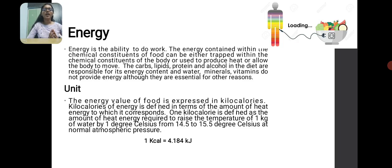First one is energy. Energy is the ability to do work. It is trapped in the chemical constituents of food and produces heat, allowing the body to move or do work. Energy is given by carbohydrates, protein, fat, and alcohol.